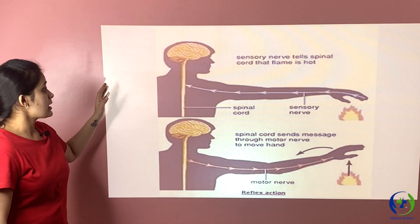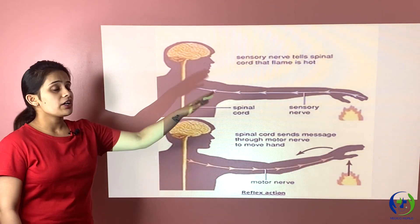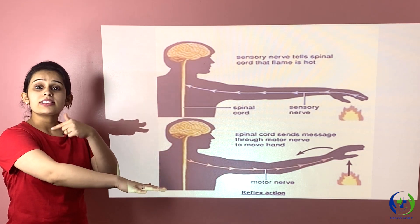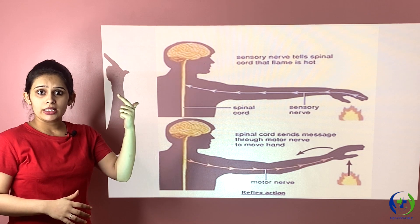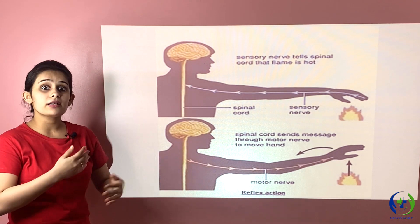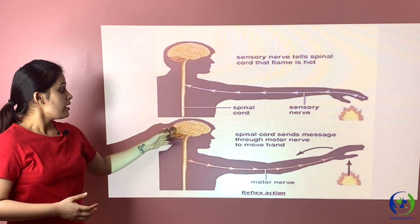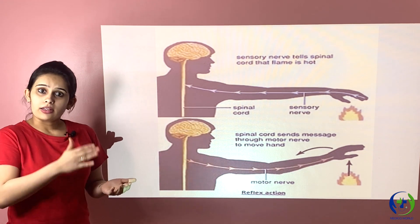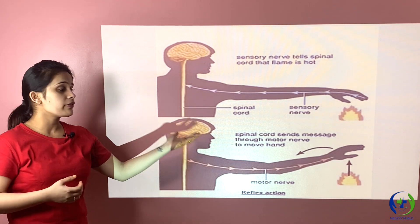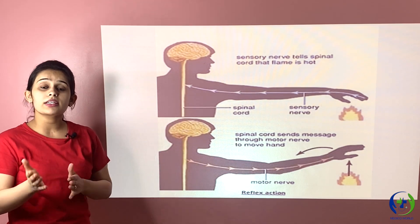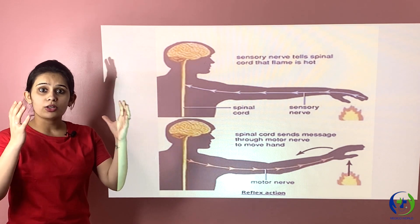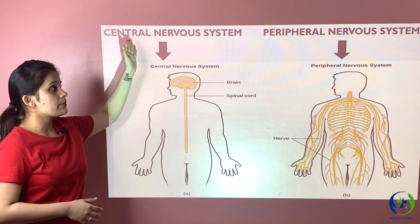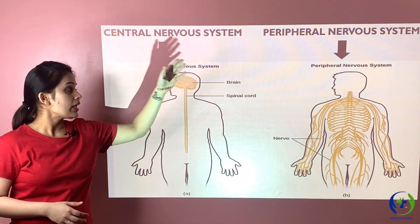The nervous system also coordinates sensory and motor actions by transmitting signals to and from different parts of the body. For example, when a person touches a flame, the sensory nerves send a signal to the brain that the flame is hot, and the brain responds by sending a signal through motor nerves telling the hand to remove itself from there because the flame is hot. This is how sensory and motor actions are controlled by the nervous system.